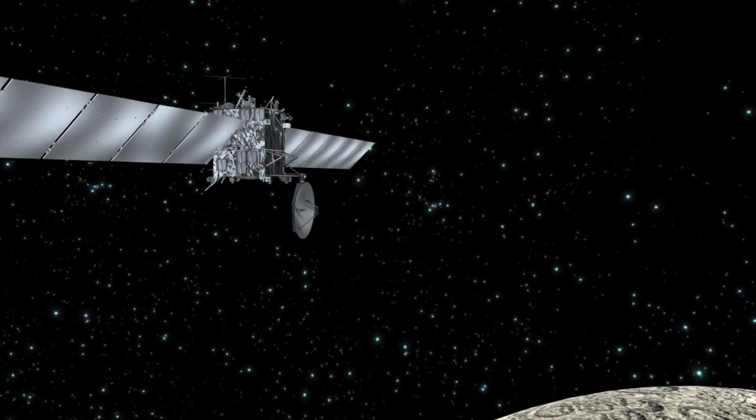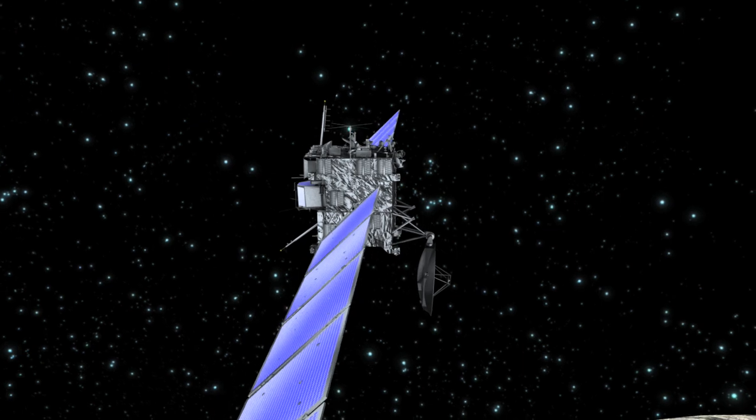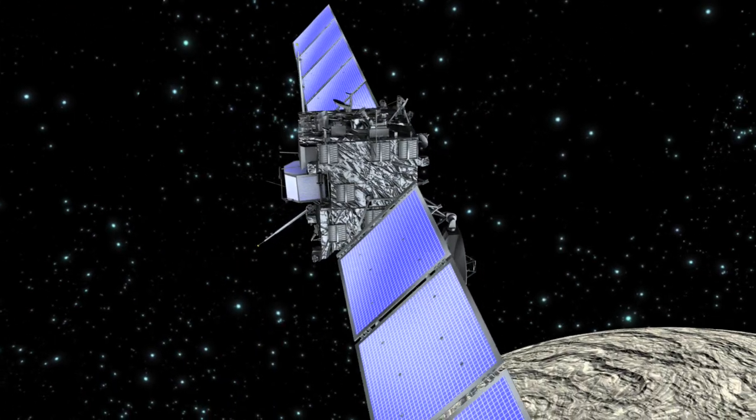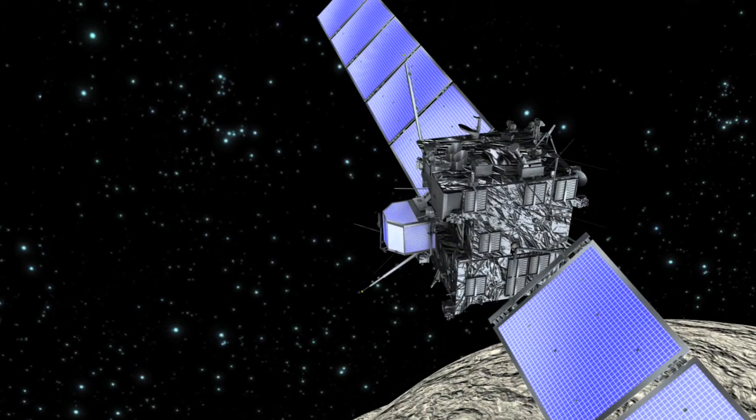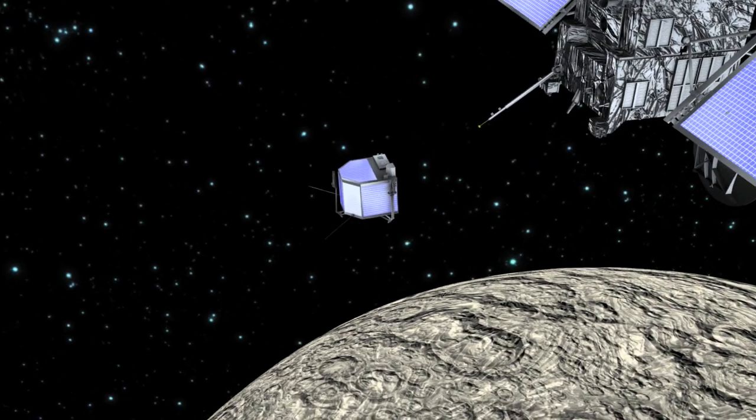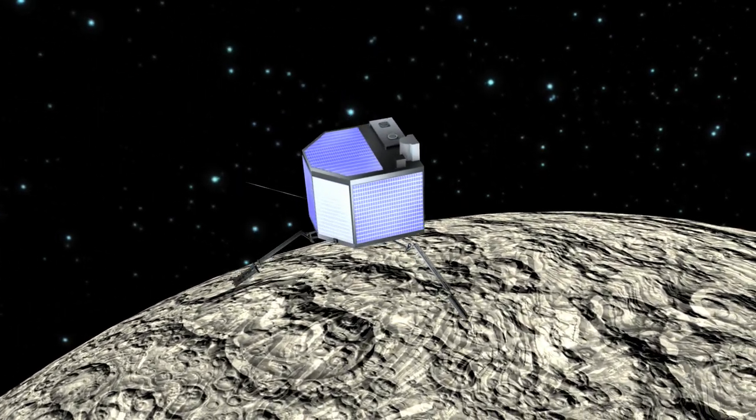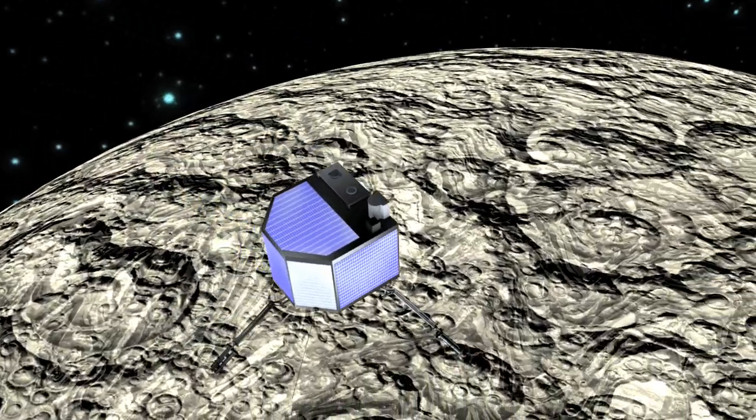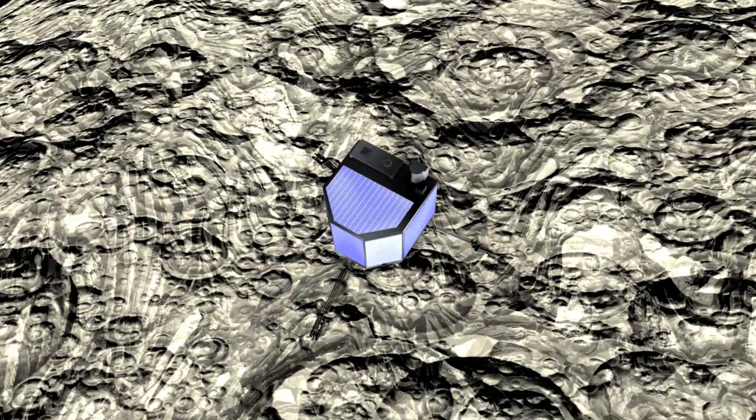Rosetta, ESA's next comet chaser, is on a ten-year journey through the solar system to encounter comet 67P Churyumov-Gerasimenko in 2014. This spacecraft will go into orbit around the comet and deploy a small lander onto the icy nucleus.